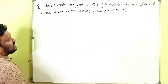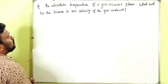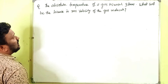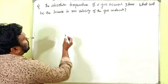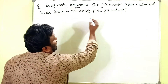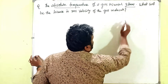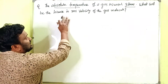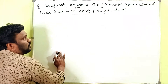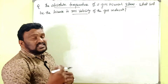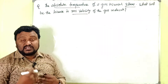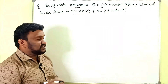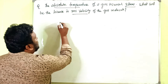The question is: the absolute temperature of a gas is increased to three times — what will be the increase in the RMS velocity of the gas molecules? So there is some gas whose temperature is increased by three times; we need to find what happens to the RMS speed.